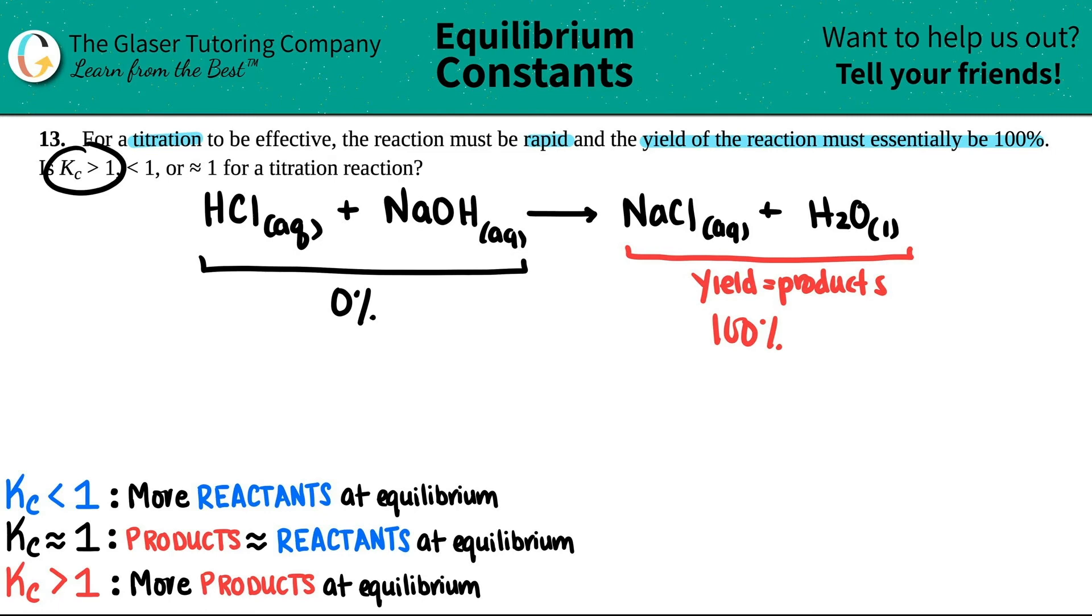And that's what it is. So they're asking for a titration reaction, would it be greater than 1, less than 1, or equal to 1? The Kc would definitely be greater than 1. And for these types of equations, especially titration of strong acid with strong base, you're going to see high numbers, like 1 times 10 to the 10th, like a really high number. We're not messing around here.